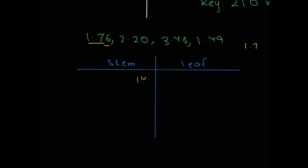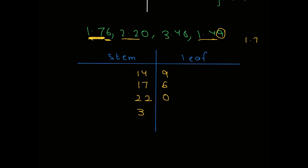So for 1.49, the stem is 14 and the leaf is 9. For 1.76, the stem is 17 and the leaf is 6. For 2.20, the stem is 22 and the leaf is 0. For 3.48, the stem is 34 and the leaf is 8.